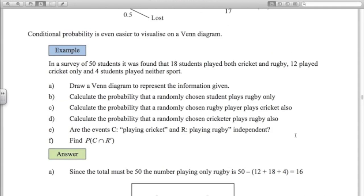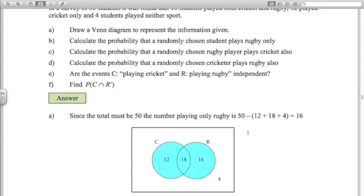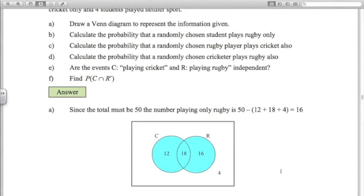We're told that, yeah, 18 students playing both. 12 played cricket only, hence the 12 here. We know 4 played neither. And we know the total of all of these numbers here has got to be 50. Hence, there's 16 people here that played only rugby.